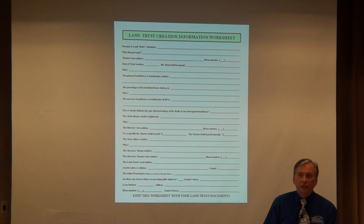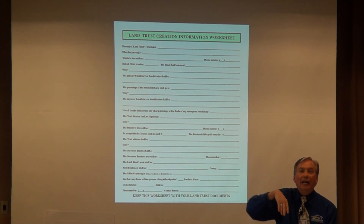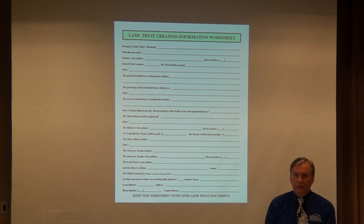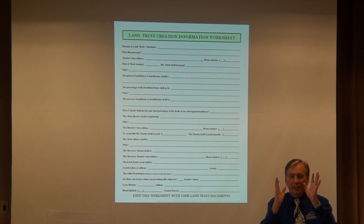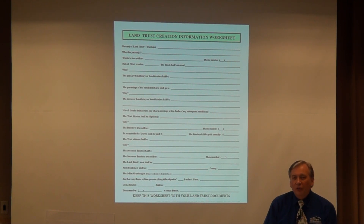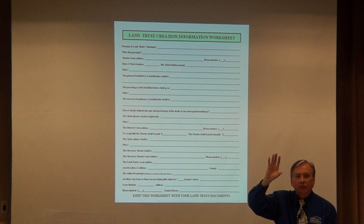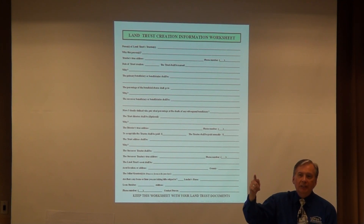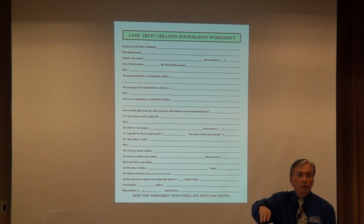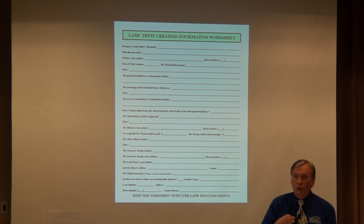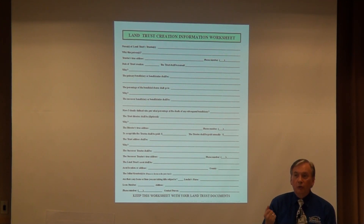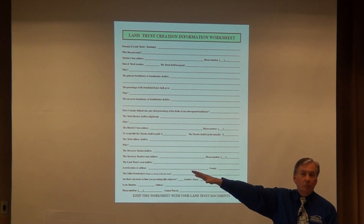How many of you have tenants mailing checks to your home? You need to obtain an office — at the UPS Store, for example. That address becomes the focal point of all mailings: property taxes, insurance, subject-to deals where you're taking over other people's financing. Tell the lender to mail to that address. Nothing should come to your own personal home. Remember the three P's: privacy, protection, and probate avoidance. To get the privacy and the protection, you need a separate mailing address.